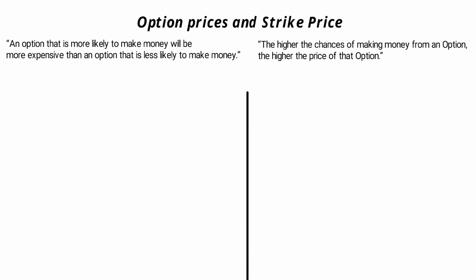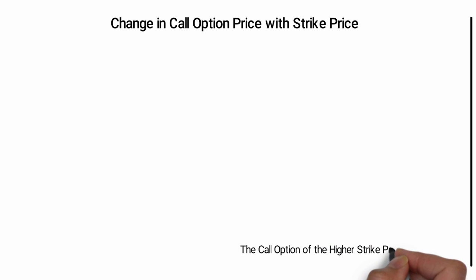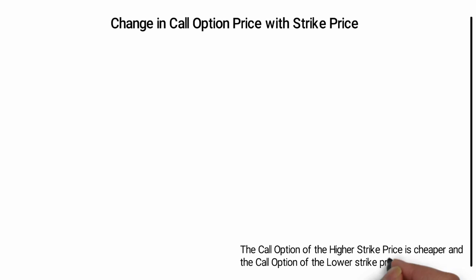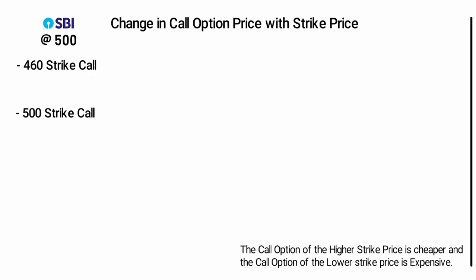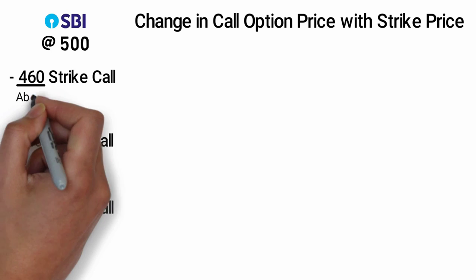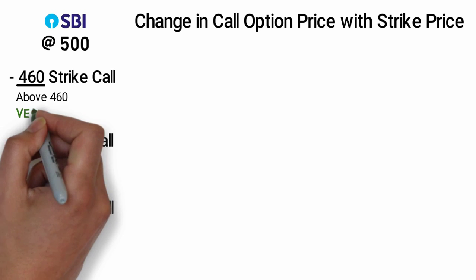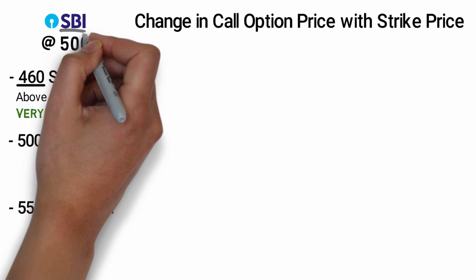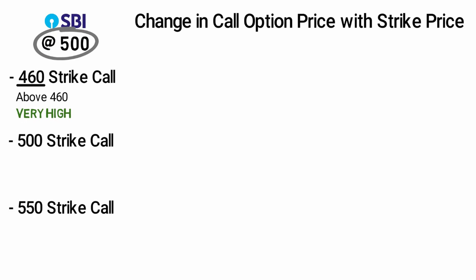Let's understand the change in call option price with strike price. The call option of a higher strike price is cheaper, and the call option of a lower strike price is expensive. Imagine SBI is trading at 500 rupees. What is more likely to make money — a 460 call, 500 call, or 550 call? What are the chances of SBI ending above 460 at expiry? Very high, because it is already above 460 and just needs to stay there.